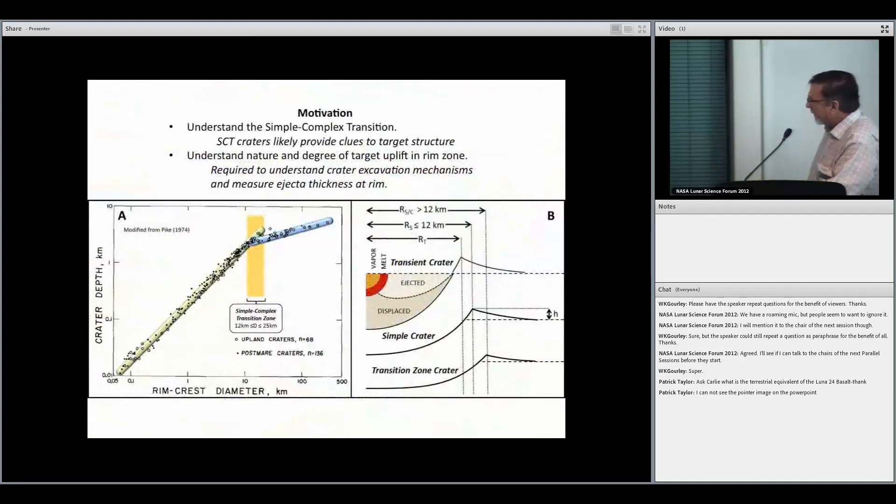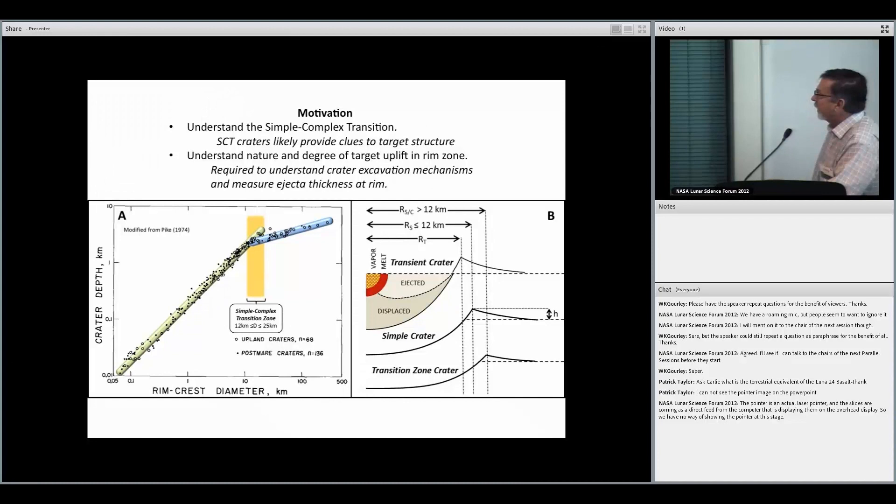So it sits in this diameter range known as the simple to complex transition zone in this work that Pike did. You can see it somewhere between 12 and 25 kilometers in diameter. And these craters are right at the boundary between the strength-dominated regime that's dictated by these simple craters and the gravity-dominated regime.